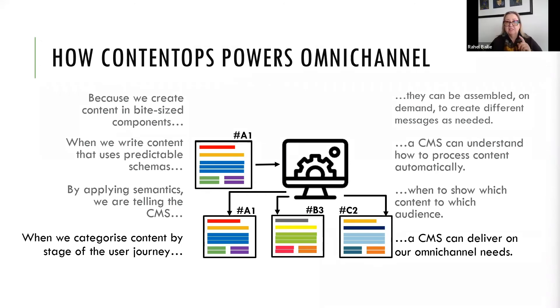The fourth way is to specify which content is important to which stage of a user journey, so that the CMS can automatically show the right content to the right audience at the right time in the user journey.